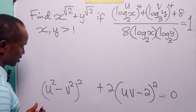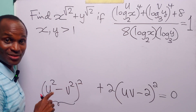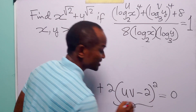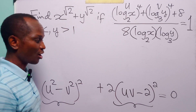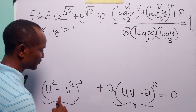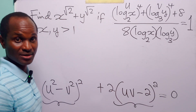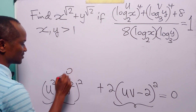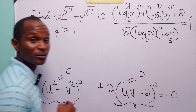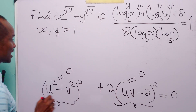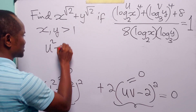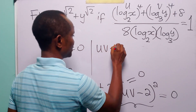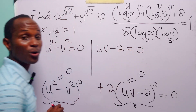Now, look at this equation. We have two quantities, each of which is a square, so each must be positive. But the equation tells us that the sum of these two squares is equal to 0. This can only happen when both squares are individually equal to 0. So we have that u squared minus v squared equals 0, and uv minus 2 equals 0.